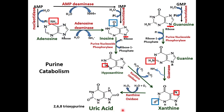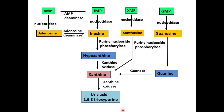Uric acid is the end product — the final excretory product — of purine catabolism. The normal serum uric acid level in adult males is 3–7 mg per deciliter, while in females it is slightly less at 2–5 mg per deciliter.